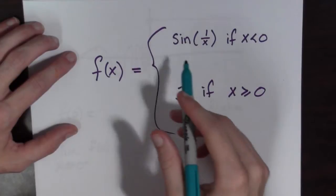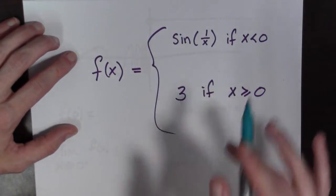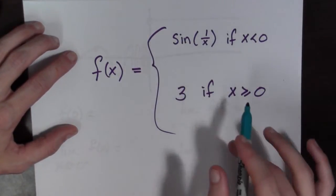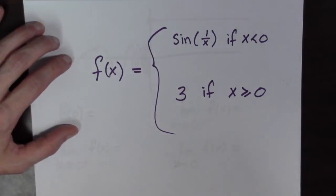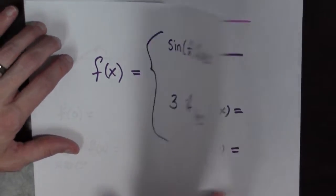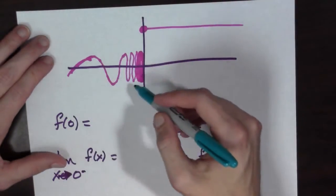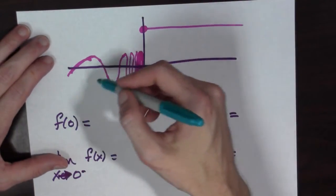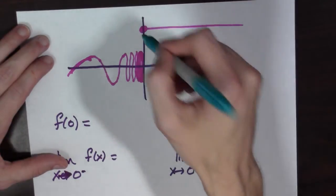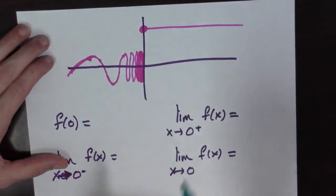So f of x is equal to sine of 1 over x if x is less than 0, and it's equal to 3 if x is greater than or equal to 0. Let's see a plot of this. So here's a plot of f of x. And as you can see, it starts to oscillate wildly when coming from the left and approaching 0. But when you get to 0, it becomes 3 and then moves off constant.